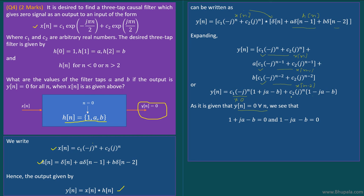Since y[n] = 0 for all n, and nothing is given about c1 and c2, and (−j)^n and (j)^n cannot be zero, the only possibility is that both bracketed terms equal zero: 1 + j·a − b = 0 and 1 − j·a − b = 0. Both equations yield a = 0 and b = 1. Hopefully you have understood this problem, thank you.